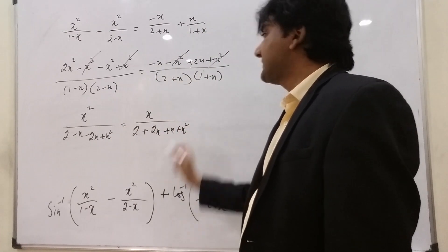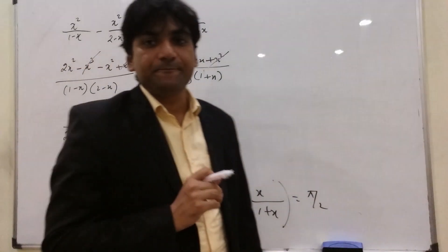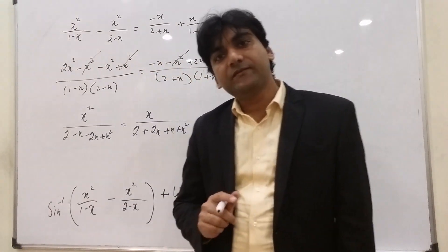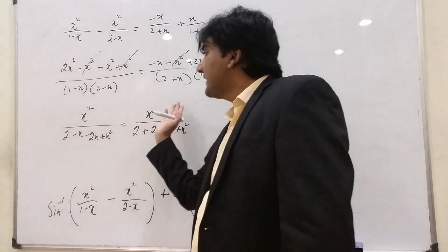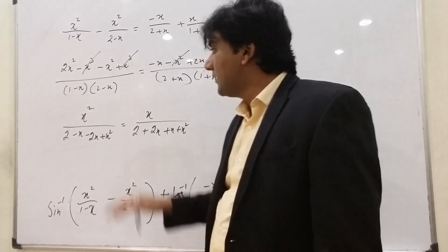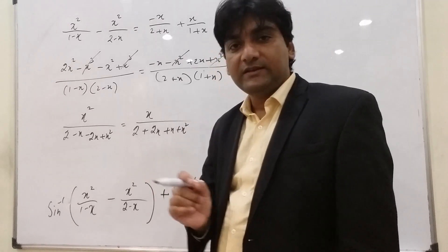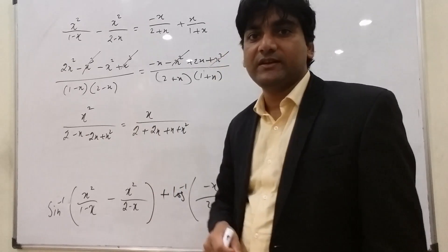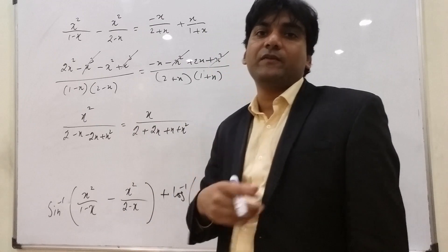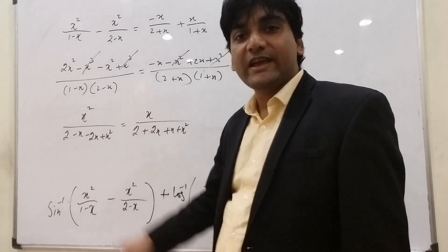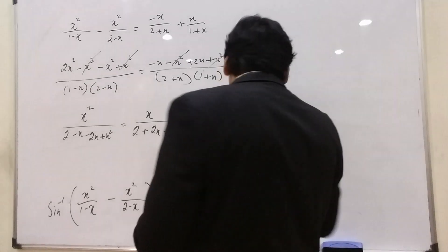Now, students often make a blunder at this step. Since the question asks for the number of solutions, students cancel x² by x and miss one solution. When finding the number of solutions, we should never cancel variables, because x = 0 would be lost as a solution.